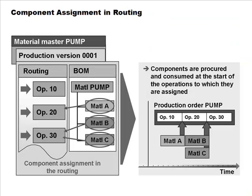We've also spoken about assigning BOM components to specific operations in the routing. This is important because MRP can then calculate the exact time at which a material is needed. Rather than assuming all materials are needed at the start, if you specify that material X is needed at operation 10 and material Y at operation 20, MRP can get the materials just at the right time.